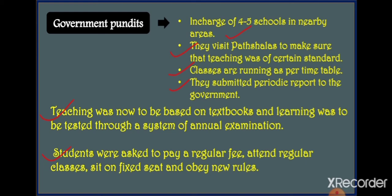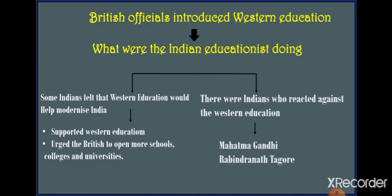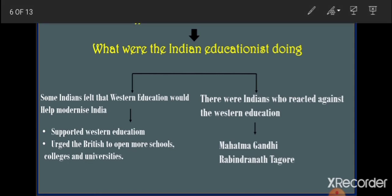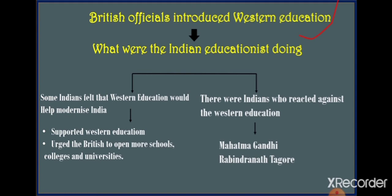So there were both benefits and demerits of British education. When Britishers were introducing Western education in India, Indian educationists were divided into two mindsets. One group believed that Western education was good and would help modernize India. The second group believed Western education was of no use.